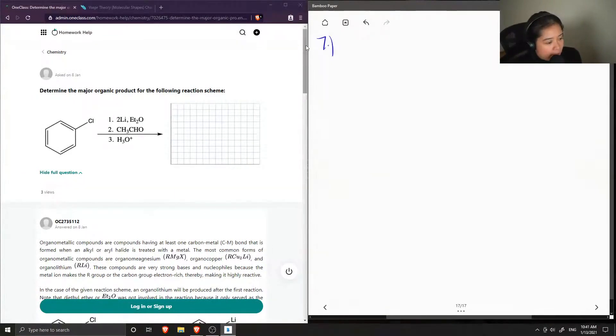So we have this benzene group that contains a chlorine, which is a good leaving group.